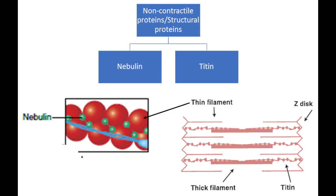The areas that include only thin filaments, or light areas, are I-bands. There are structural and non-contractile proteins in the sarcomere as well. The most important of them are titin and nebulin. Titin attaches the thick band to the Z-line and nebulin stabilizes the position of actin. These proteins are also called parallel elastic components — parallel because they lie parallel to thin and thick filaments, and elastic because nebulin and elastin along with epimysium and perimysium are responsible for muscle flexibility.